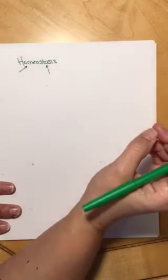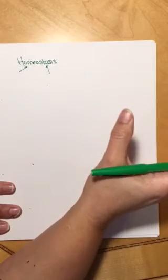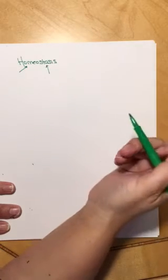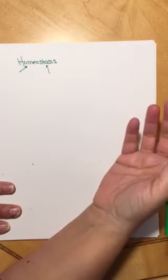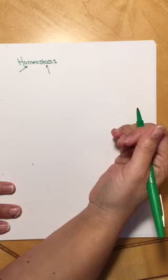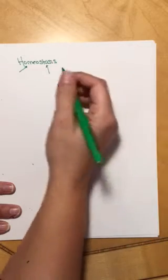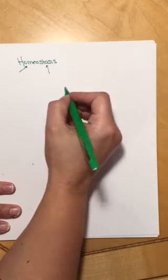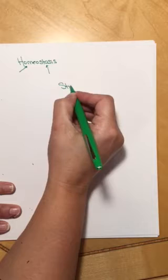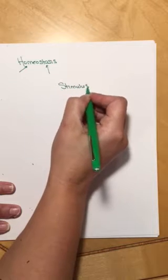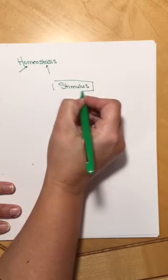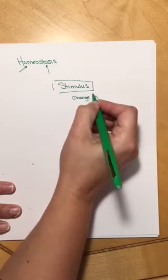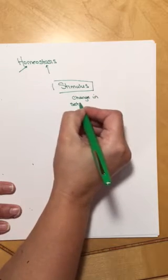Now that doesn't mean that the body never changes. Far from it, the body is constantly changing. What it means is that when there is a change, we are going to try and bring the body back into normal values. So there are a number of different components to a homeostatic loop. The first one is the stimulus, and the stimulus is really just a change in some set point value.